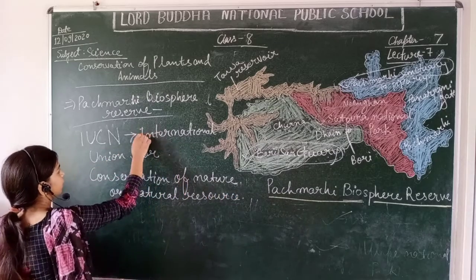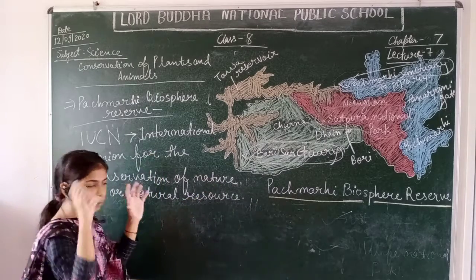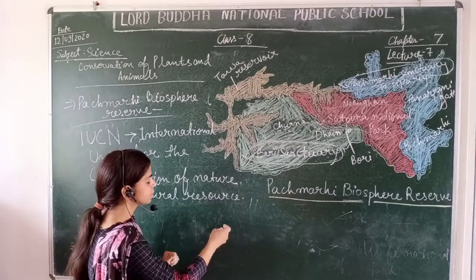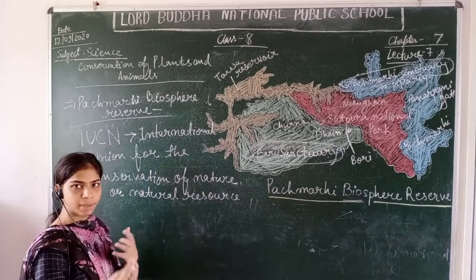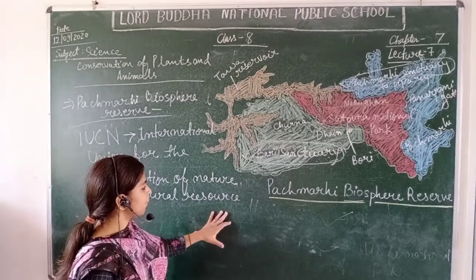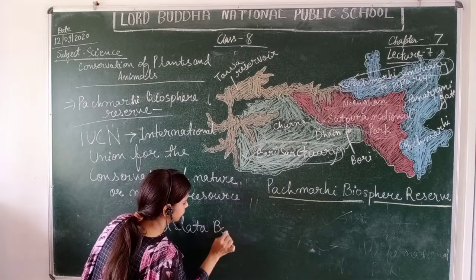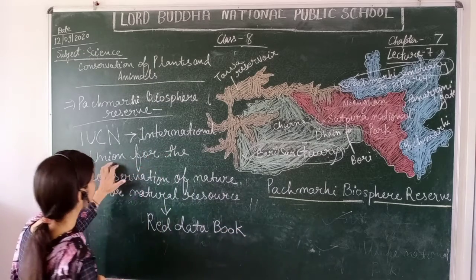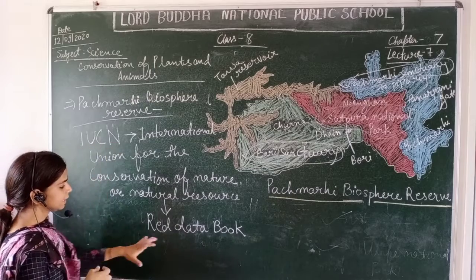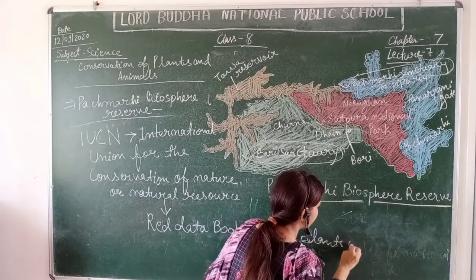IUCN stands for International Union for the Conservation of Nature and Natural Resources. The conservation list of plants and animals that are protected or endangered is maintained and created by IUCN. IUCN publishes Red Data Books, which contain the list of plants and animals.